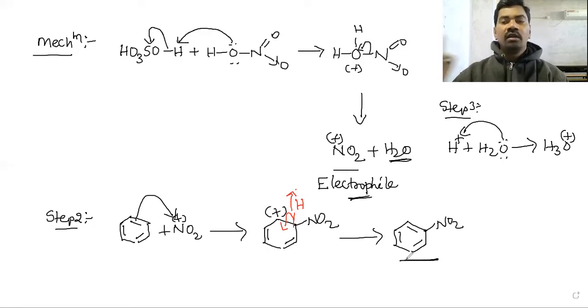Simple nitrobenzene forms when nitration mixture, concentrated HNO3 plus concentrated H2SO4, reacts to generate nitronium electrophile. This nitronium electrophile attacks benzene to form nitrobenzene. This is nitration of benzene. Students, like, share, and comment. Check out chemistry-related videos on my channel. Subscribe, support, share, and thank you for watching.